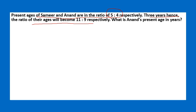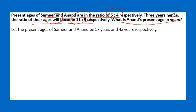If 4x is 1 to 2, then 5x plus 3 and 4x plus 3. That is simple logic — that is 11 is to 9. So what is the percentage? We have to use the ratio of this. So simply, 5x is to 4x.